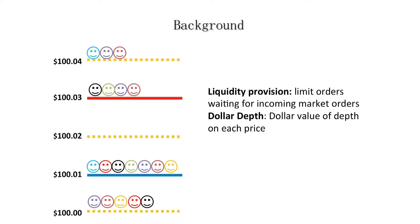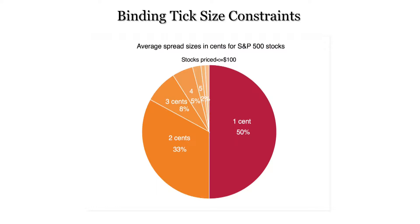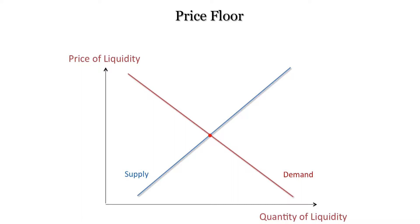Now let's talk about the one-cent tick size constraint. Here is one of the major graphs of this paper — it's surprisingly binding. For S&P 500 stocks with prices below $100, 50% of them have exactly a one-penny spread. If you plot that, you'll find a huge cluster at one-penny bid-ask spread. That means liquidity is decided by supply and demand, and at this point — let's call it the natural bid-ask spread — the tick size imposes a floor on the minimum price you can quote. This is the Econ 101 graph. A surplus will happen: more people are willing to provide liquidity than demand it.